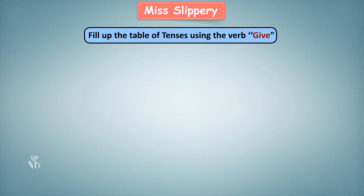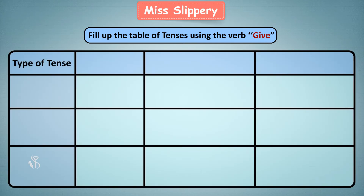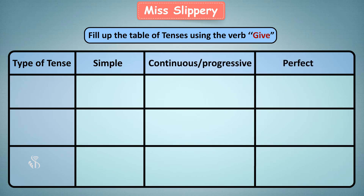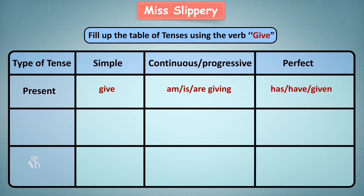Fill up the table of tenses using the verb 'give.' Type of tense: simple, continuous/progressive, perfect. Present: give. Am, is, are giving. Has, have given.